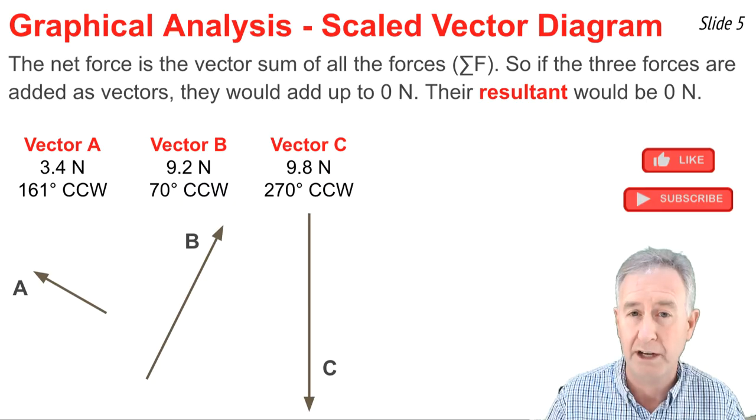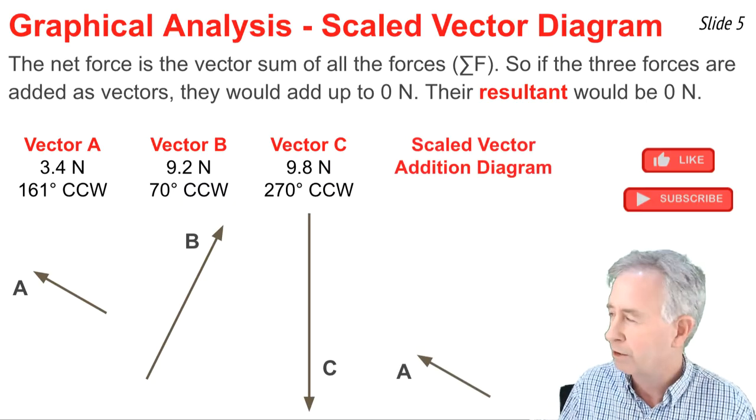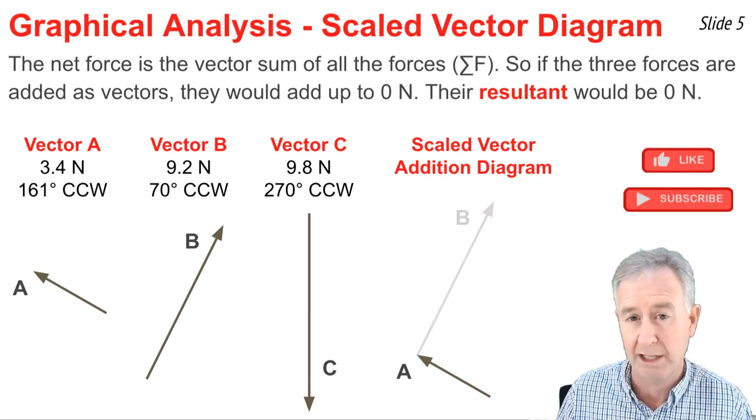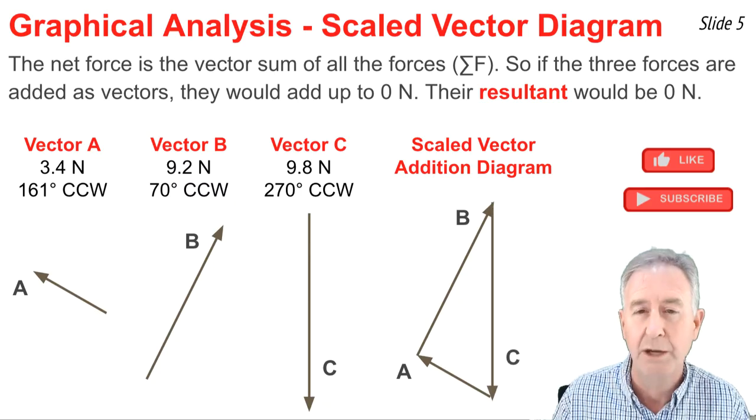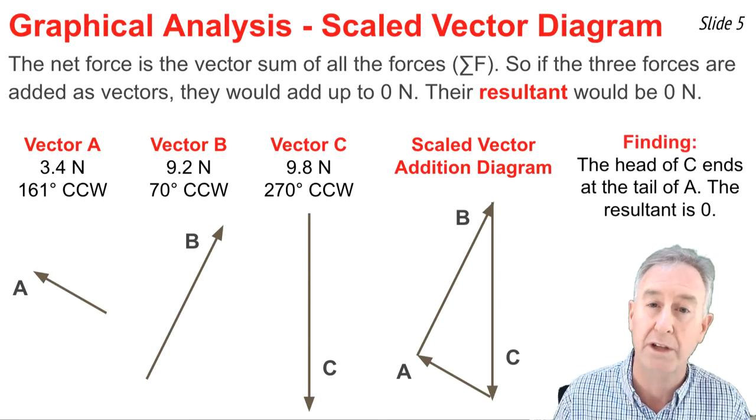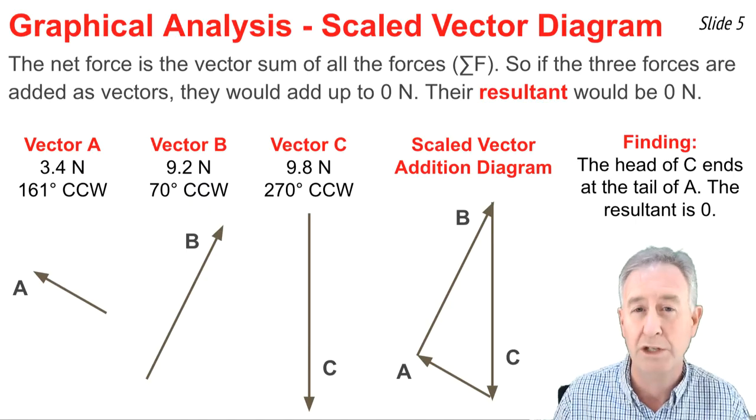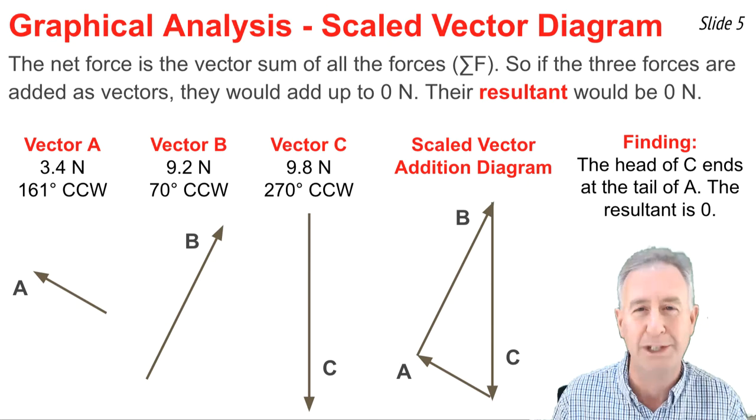When I do my scaled vector diagram, I'm going to add these forces in head-to-tail fashion. So here's force A, and where its arrowhead ends, I add force B, and where its arrowhead ends, I add force C. And what we notice is that arrowhead of C ends where the tail of A began, which tells us the resultant of A plus B plus C is equal to zero newtons.